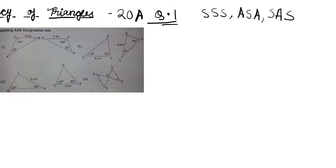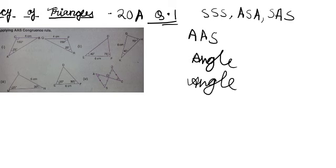Now we are going to use one more rule: AAS — Angle, Angle, and Side. There are basically three factors we must prove while proving congruency of triangles using this method, and they are two angles and one side. We have studied ASA as well, which also has two angles.